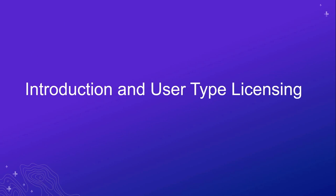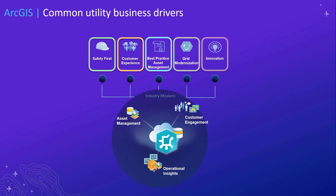Looking at the architecture and the utility network, the first place to start is really the business drivers of a utility. Safety, reliability, customer service, asset management, and innovation are all founding elements. The utility network was conceived to address the changing environment that regulatory agencies have put on utilities, to give a better information platform to support the system of engagement, the system of record, and the system of insight.